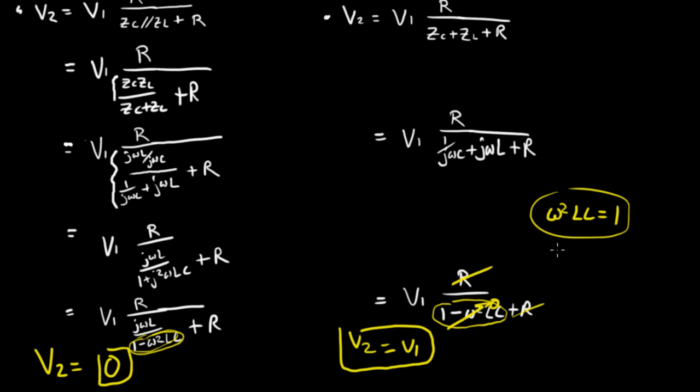so V2 equals V1 for the series resonant circuit at resonant frequency. And by resonance I mean that omega is going to be equal to 1 over the square root of LC, it's just rewriting that expression.